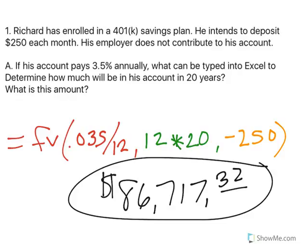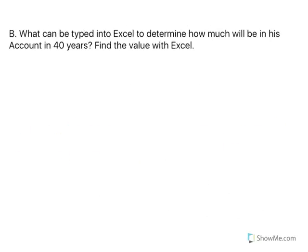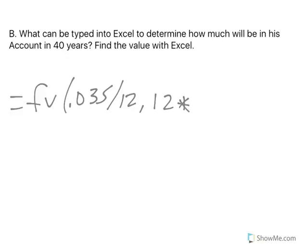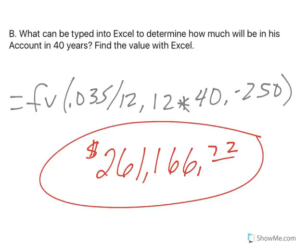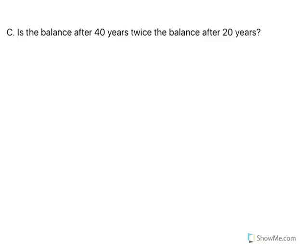So after 20 years, that's how much Richard would have in his savings account. Now, how much will he have in 40 years? We use that same future value formula: .035 divided by 12, but instead of 20, now I'm using 40. He's still putting in $250. Now we see he's going to have $261,166.72. The longer you keep it in, the more you're going to have — and it's significantly more.